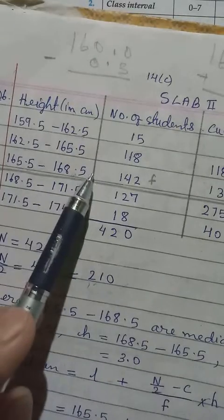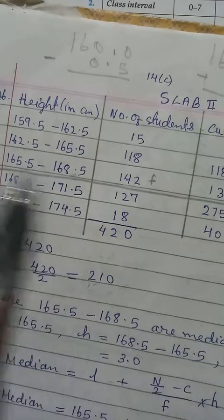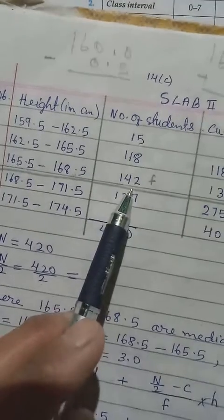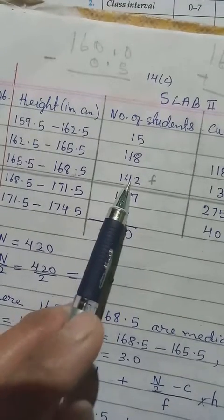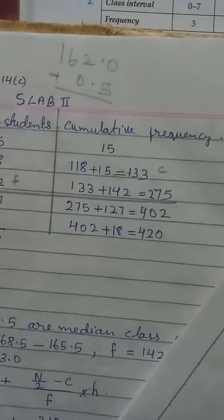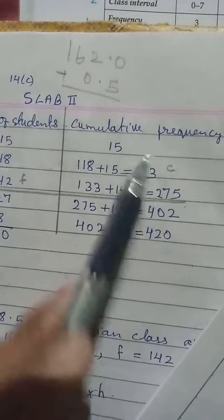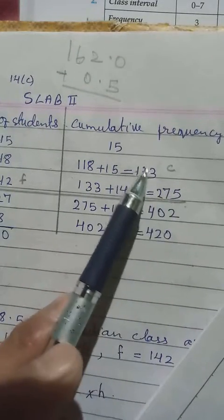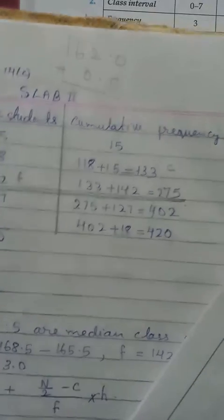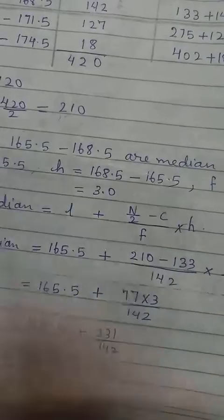H, which is the class size, we have to do upper limit minus lower limit. Then F, it is the frequency of the median class. And C, it is the cumulative frequency we have to take, but before the median class. This is the median class before it is 133.